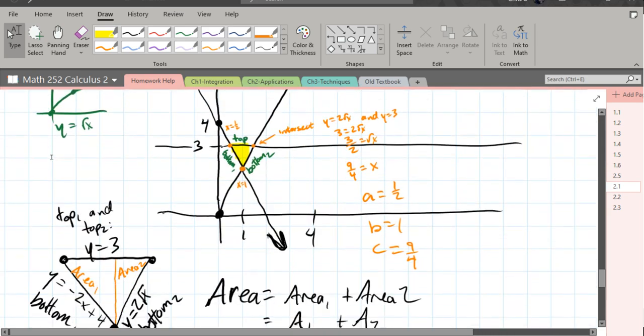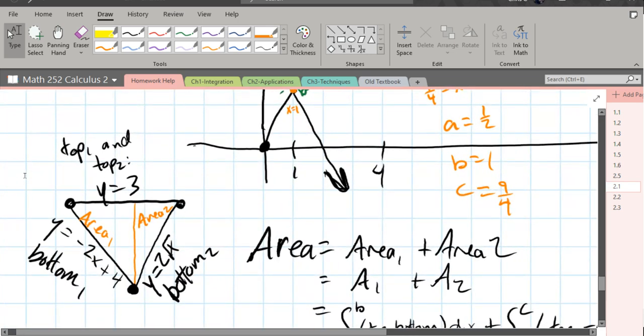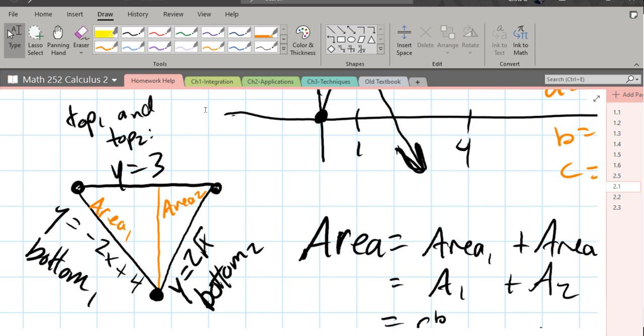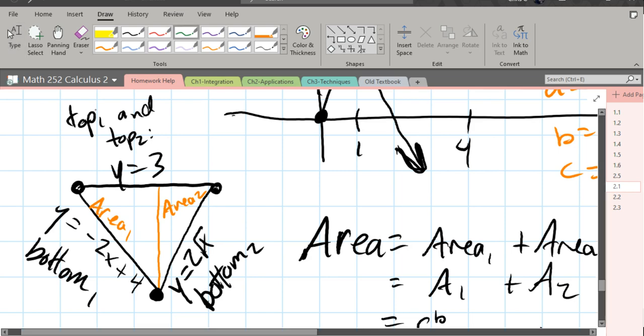So what I did is I redrew the area down here. Now, we have to split this into two pieces if we integrate with respect to x. You can definitely integrate this with respect to y. The one thing you're going to have to do is solve all of these for x. So you'd have to solve for x here, solve for x here. It's not hard to do. The big advantage if you did this as a y integral is you would only have one big and one small curve. You can do this in one single area.